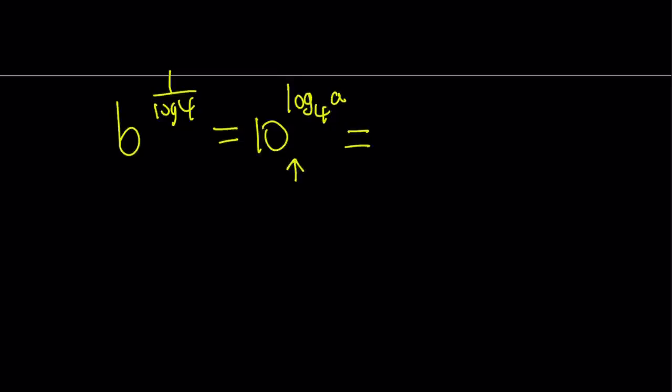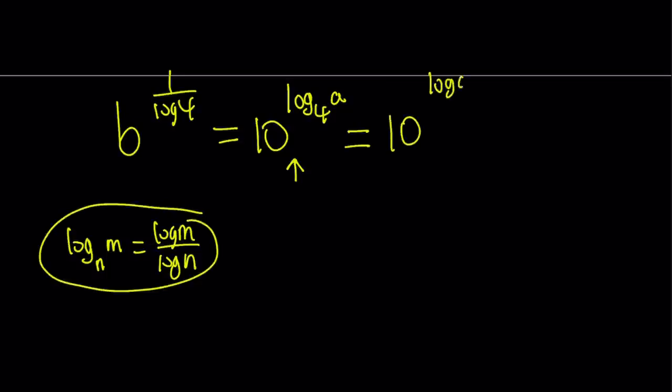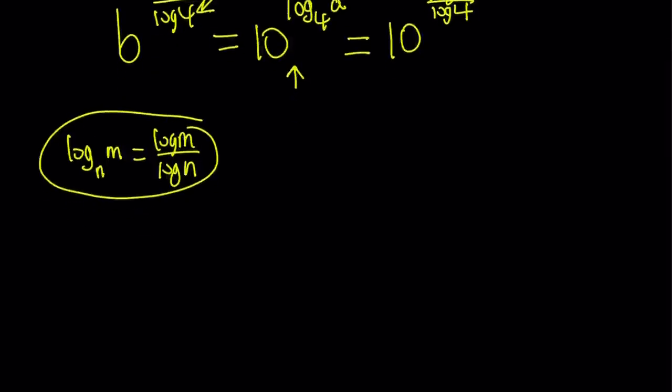How does change of base work? If you have log base n of m, you can write it as log m over log n. Here I use base 10, but you can use any base you want. That's change of base. So I can write this as 10^(log a / log 4). Here I want to use base 10 because this is also in base 10. So let's rewrite it.